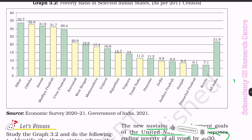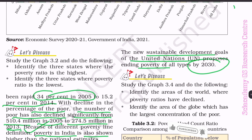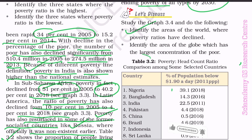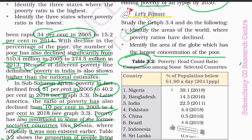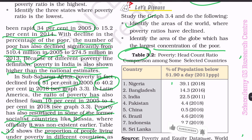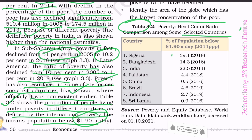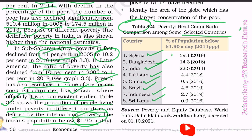Let's discuss: Study graph 3.4 and identify the areas of the world where poverty ratios have declined, and identify the area of the globe with the largest concentration of the poor. Poverty headcount ratio comparison among selected countries: Nigeria, Bangladesh, India, Pakistan, China, Brazil, Indonesia, Sri Lanka — source: Poverty and Equity Database, World Bank.